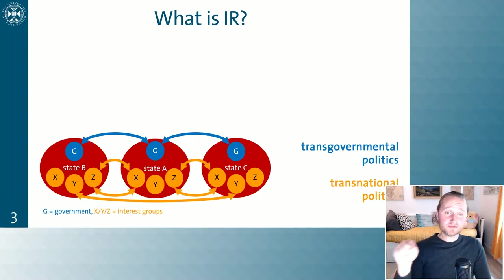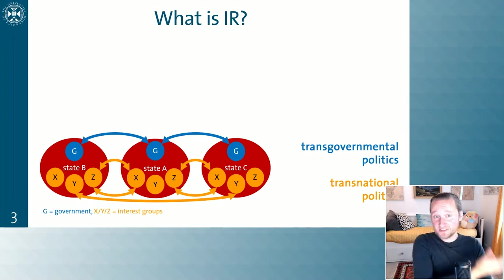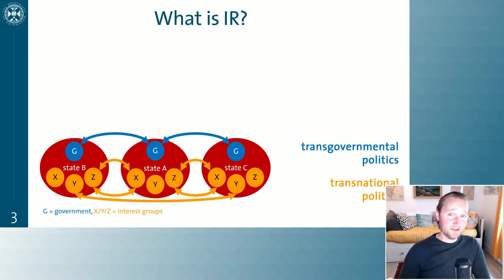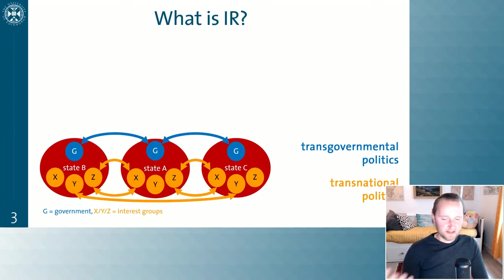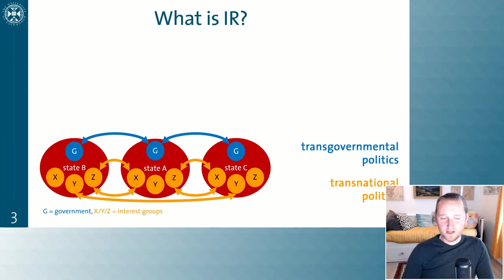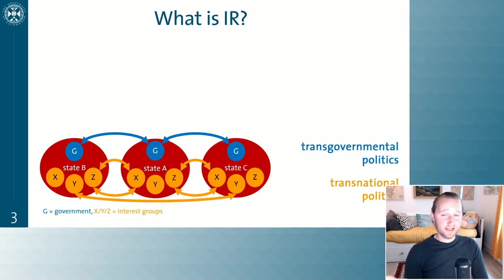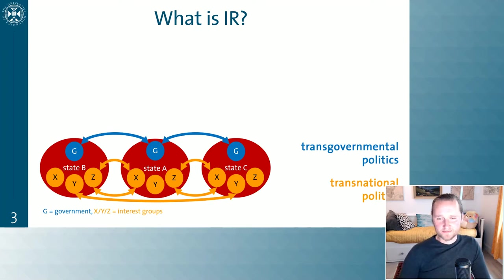We could also think about interest groups interacting across borders. There's Amnesty International in the UK, but also in lots of other countries, and they can interact. Amnesty UK isn't asking the UK government if it can email Amnesty Germany — they just do that. They might coordinate campaigns, transfer funds, move their people, coordinate their policies, or coordinate what they're pushing for at the international level. They could also work against each other — Greenpeace pressuring a palm oil producer in a different country to be more sustainable. All of these interactions we call transnational politics.